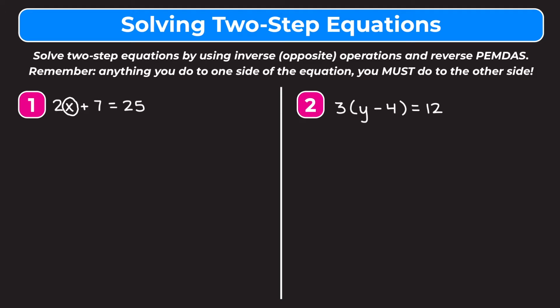Reverse PEMDAS means that we want to start with addition and subtraction. Normally for PEMDAS we go from left to right, so for reverse PEMDAS we want to go from right to left. We want to start by getting rid of anything on the left side of our equation that is being added or subtracted. In this case we want to get rid of this plus 7 first.